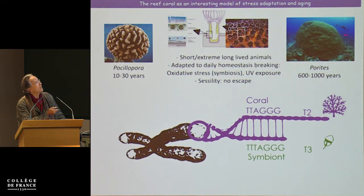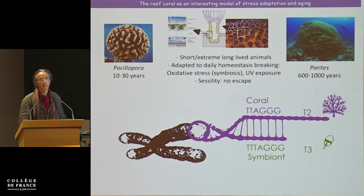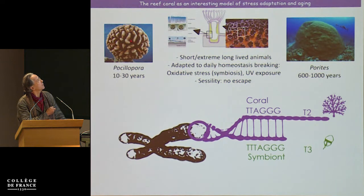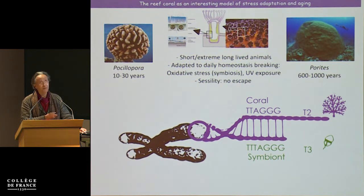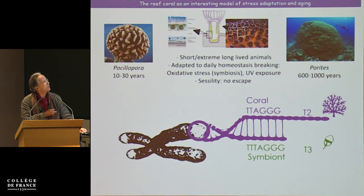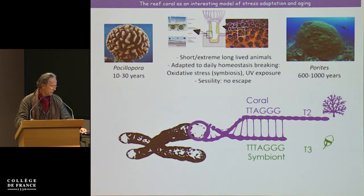Strikingly, in the face of such stressful conditions, corals can live very long. This is an example of Porites — you can see a diver next to it, it's very large — and it has been shown they can live up to 1,000 years, some kind of world record for animals. From a telomere perspective it's very interesting: they have the same sequence on Earth — the phylogeny is very bizarre for telomeres — and in the same animals we have a mix between human-type telomere and plant-type with an additional T, enough to design specific molecular probes we call T3.